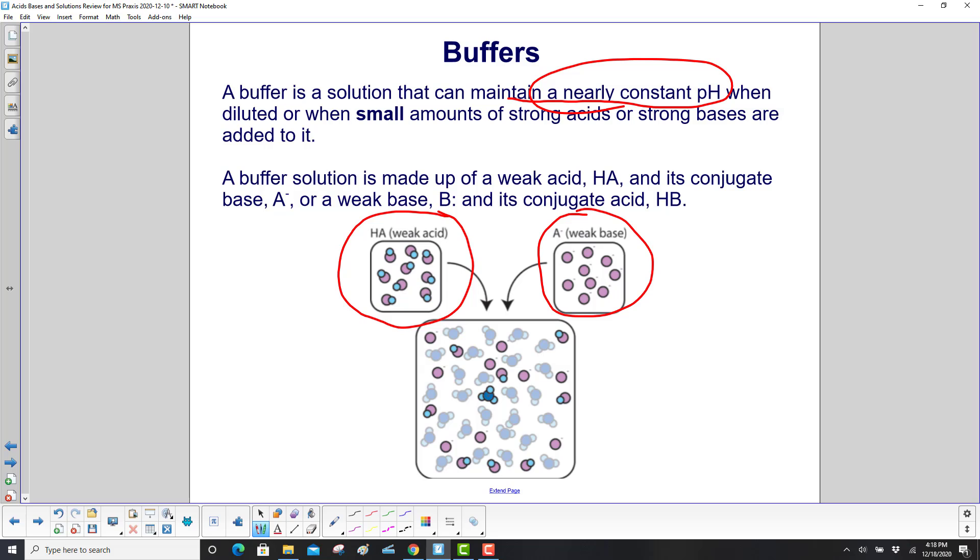So weak acid, weak base. Or a weak base, B, and its conjugate acid, HB+.